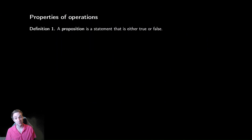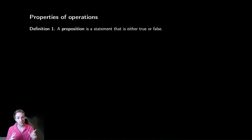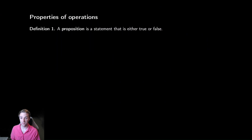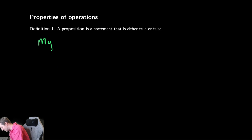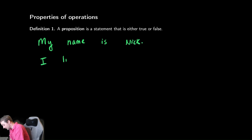So the first thing we're going to introduce is what's called a proposition. This is one of the smallest possible units you can use to talk about logic. It's just a statement that is either true or false. There are some obvious examples you could write down, like 'my name is Nick.' That is a proposition. You could write down things like 'I live in Columbus, Ohio.'